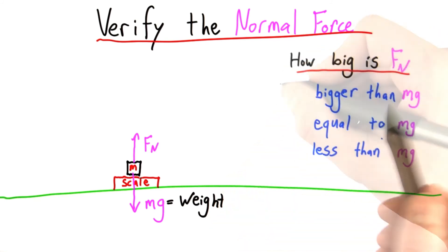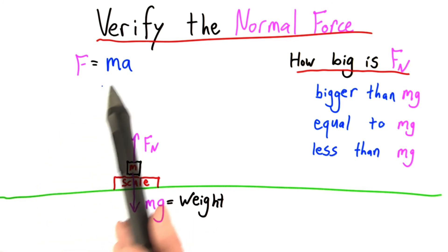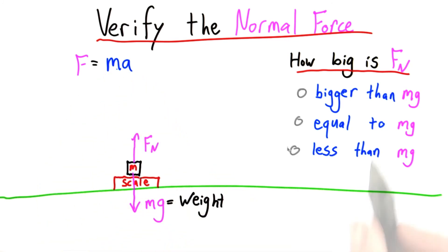Now let's think, how big is that normal force? Is it bigger than mg, equal to mg, or less than mg? And remember, the total or net force on an object is equal to its mass times the object's acceleration. Choose the best answer.